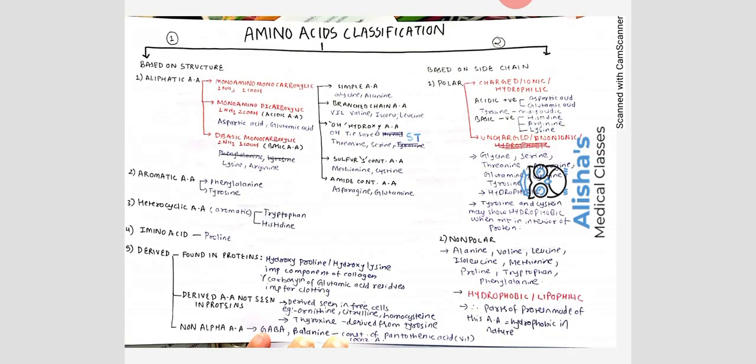When we talk about structure, we are talking about how the amino acid looks — is it aliphatic, is it aromatic, is it made up of any ring or any other group? For reference, I have used Vasudevan Biochemistry by DM Vasudevan. If you want to refer to the same, please refer to the Vasudevan book, which is a very good book with detailed descriptions.